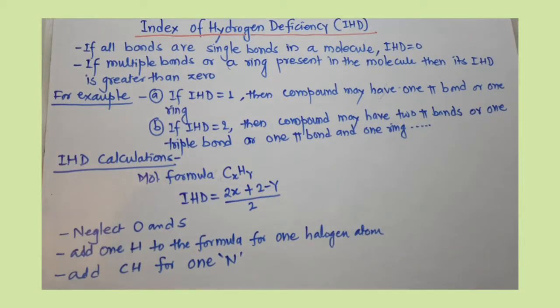IHD means index of hydrogen deficiency. IHD calculations are important when we find the structure from different spectral data. If you know the molecular formula, then from this molecular formula we can find out the index of hydrogen deficiency.